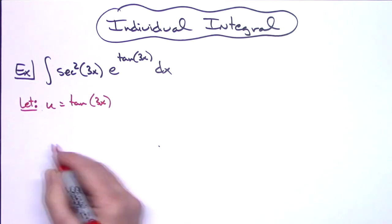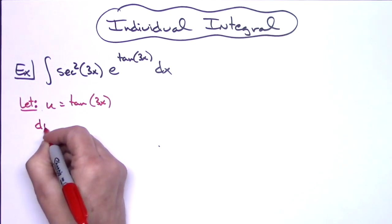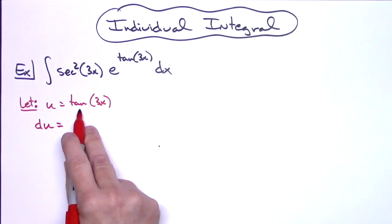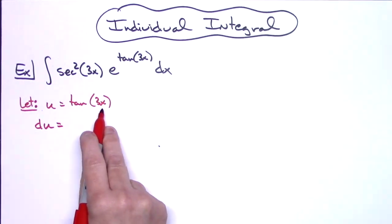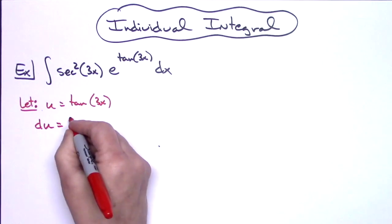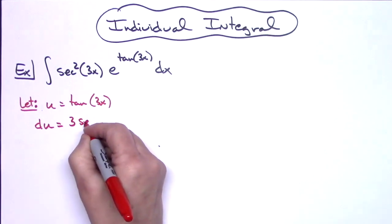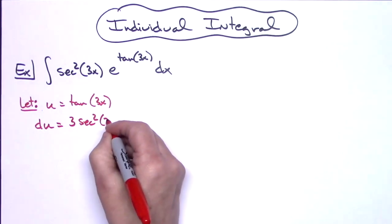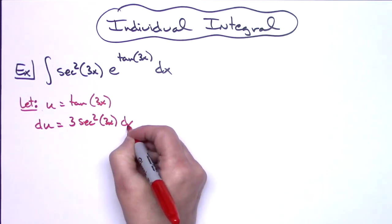Then I'm going to take the derivative of both sides, so I'll have du is equal to, if we remember the chain here, we will have a 3 in front, so it'll be 3 and then secant squared of 3x and then a dx.